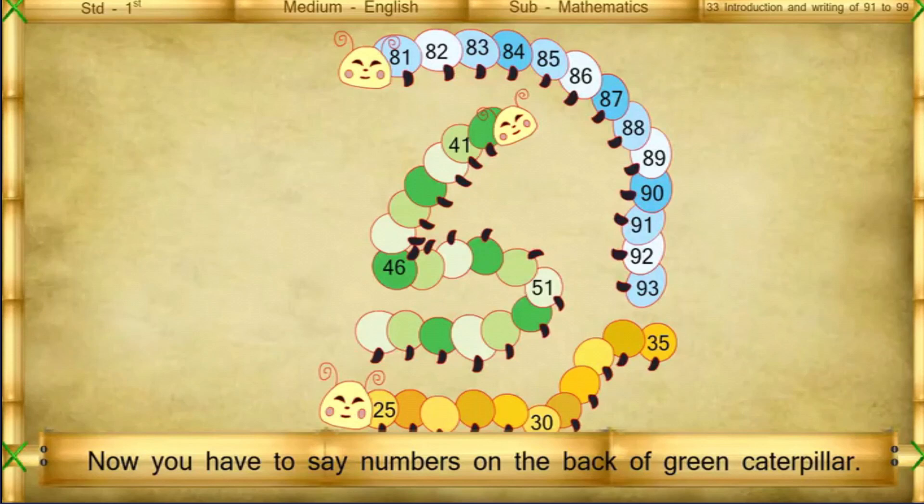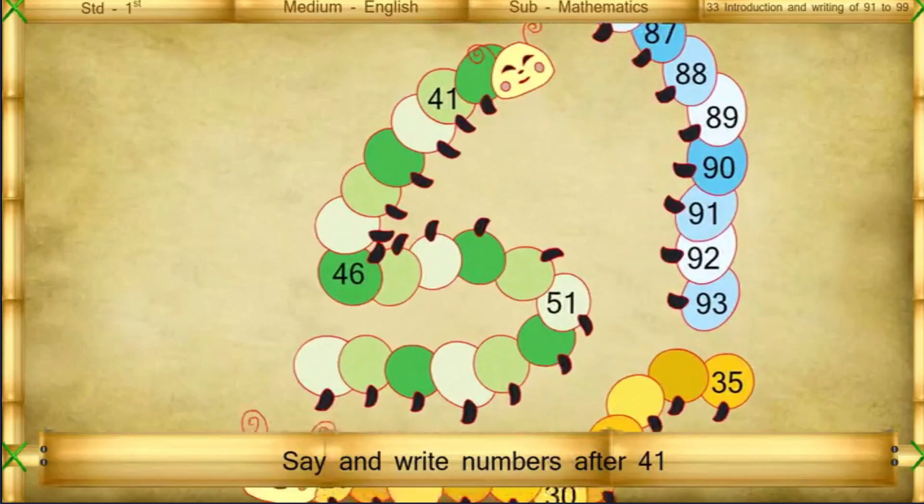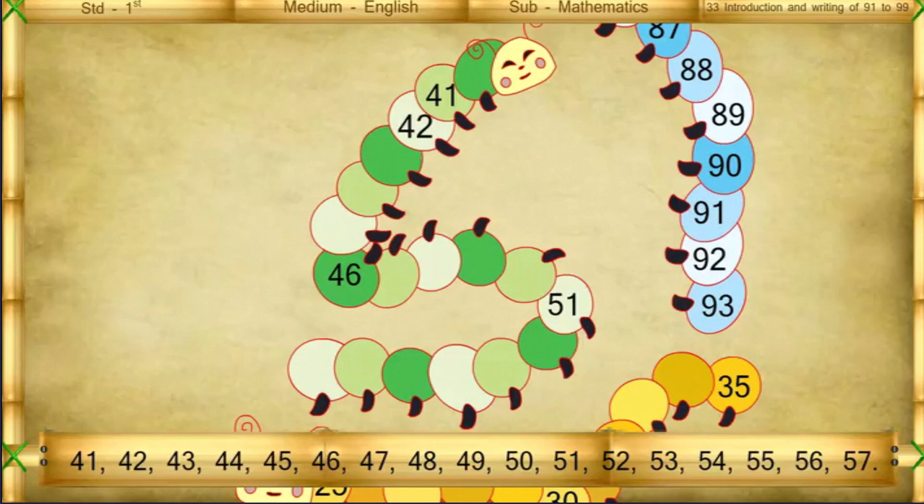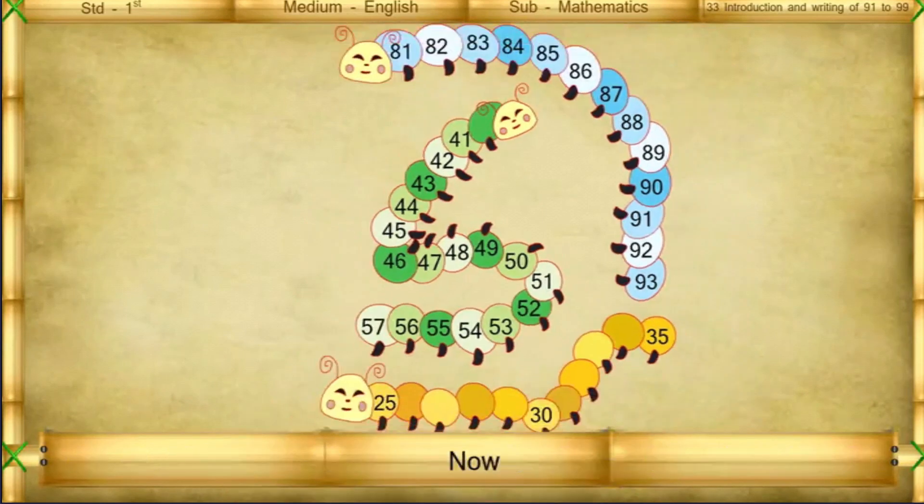Now you have to say numbers on the back of green caterpillar. Say and write numbers after 41. 41, 42, 43, 44, 45, 46, 47, 48, 49, 50, 51, 52, 53, 54, 55, 56, 57.